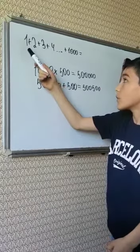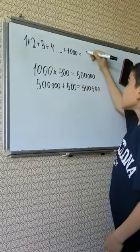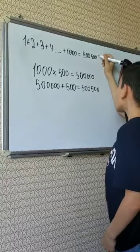So, the answer is 500,500. The sum of all numbers from 1 to 1000 is 500,500.